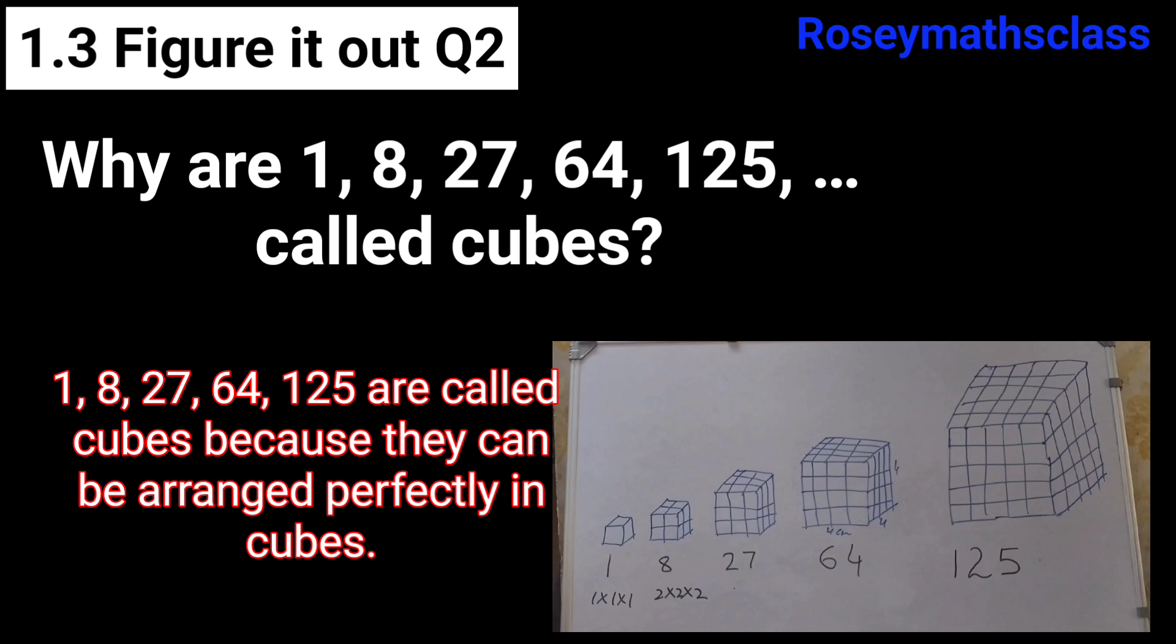So here, 1, the first one is just 1 cube. Then 8 cubes are arranged as a perfect cube. Then 27 cubes are again arranged as a perfect cube. So all these numbers can be arranged perfectly as cubes.